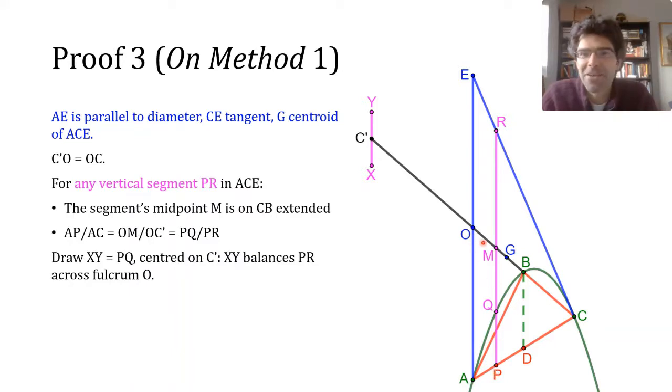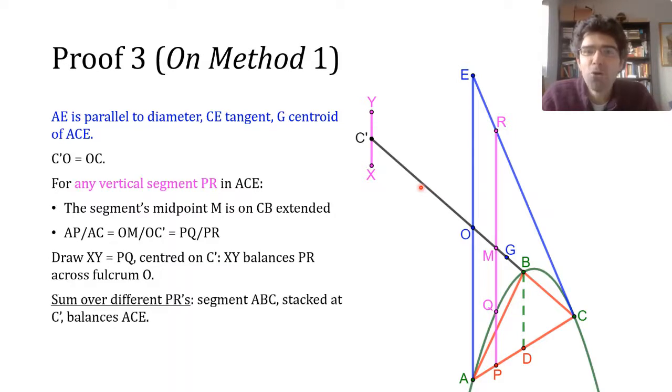And then Archimedes does something which he knew was a bit of a fudge. Imagine doing this for all the vertical lines across triangle ACE in sequence. Then effectively, you would build up a figure congruent to the parabolic segment centred on C dash, and that would balance the whole of triangle ACE, again with the fulcrum at O.